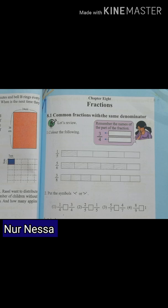You did fractions in your previous class also, so let's review. In this picture you can see a fraction: three by four. Can you recognize the name of three and four? আমরা আগের ক্লাসে fraction করেছি। তাই তো বাবা, fraction কে বাংলায় বলা হয় ভগ্নাংশ। এখানে ছবিতে যে আমরা একটি ভগ্নাংশ দেখতে পাচ্ছি। ভগ্নাংশের উপরে যে নম্বরটি থাকে সেটি হচ্ছে numerator অথবা লব, আর ভগ্নাংশের নিচে যে নম্বরটি থাকে সেটি হচ্ছে denominator অথবা হর।